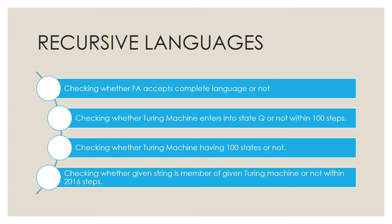The next example is checking whether a finite automata accepts a complete language or not — the totality problem. Another example is checking whether a Turing machine enters into a state q or not within 100 steps. Note that 'within 100 steps' means within a finite number of steps, so we can determine this — making it a recursive language.